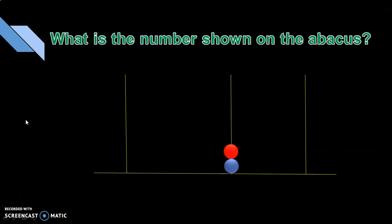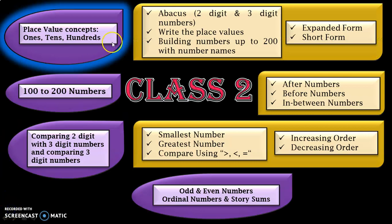This is a quick question for you to answer: what is the number shown in the Abacus? Please leave your answers in the comment section — I shall respond to all your comments. With that, we complete all the topics under the place value concepts. In part 1 of the video, we covered Abacus concepts and building numbers up to 200 with number names, and some interesting questions for Abacus and building numbers with number names. In this part 2 video, we saw interesting questions for place value concepts, expanded form, and short form.